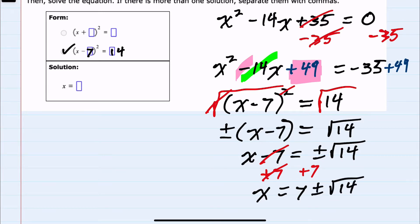Writing this with commas, I would have two solutions: 7 + √14 and 7 - √14.